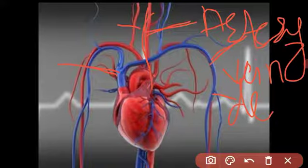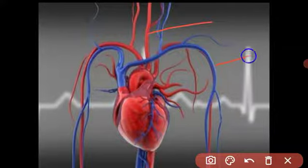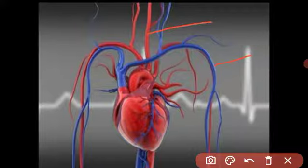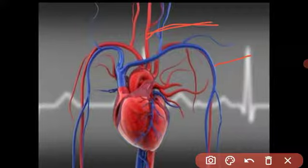Naturally, arteries carry light red blood and veins carry dark red blood, but in diagrams arteries are shown in red and veins in blue for your distinction. The main difference: arteries carry blood from the heart towards the body, carrying oxygenated blood only — except the pulmonary artery. Veins carry blood from the body towards the heart, carrying deoxygenated blood. In between the arteries and veins, there are many capillaries.